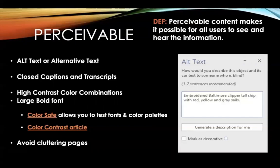Alt text, or alternative text, refers to the written description of an image. When a screen reader sees an image in a document or webpage, if no alt text is present, it assumes that the image is purely decorative and skips the element completely. In most programs, you can add alt text by right-clicking your image and selecting the option to edit alt text, as you can see from the image on the right.